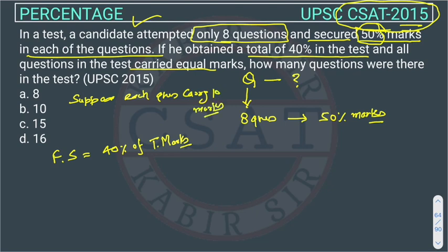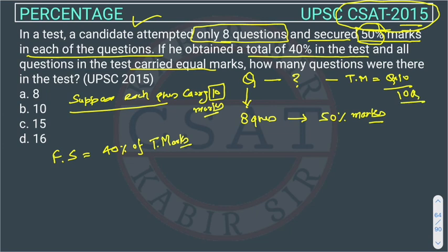Suppose each question carries 10 marks — you can take any value, the answer will remain the same. There are Q questions, so total marks will be 10Q. He attempted 8 questions, so he attempted for 80 marks (8 into 10), but he is getting only 50 percent of that.